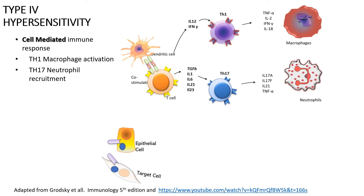It is the macrophage and neutrophil that produces the damage onto the tissue that is carrying the allergen or the drug that's immunogenic. This Th1 and Th17 response is CD4-mediated, and they're also called delayed type hypersensitivity, or DTH.